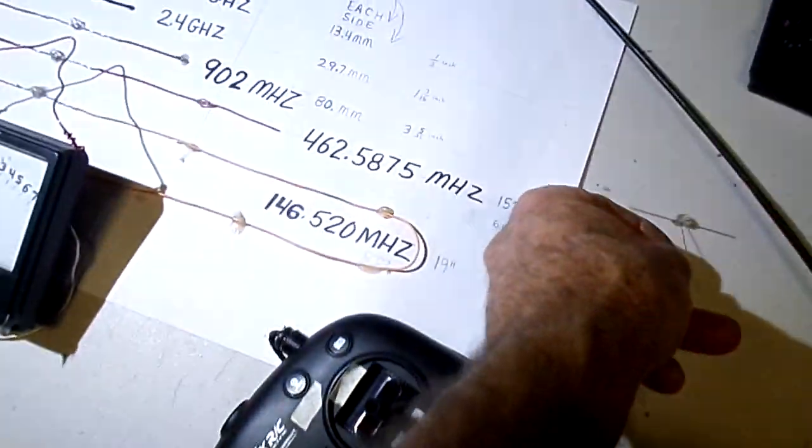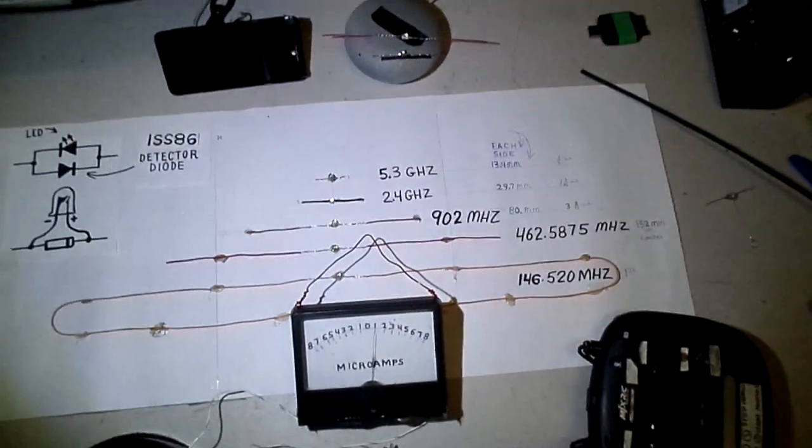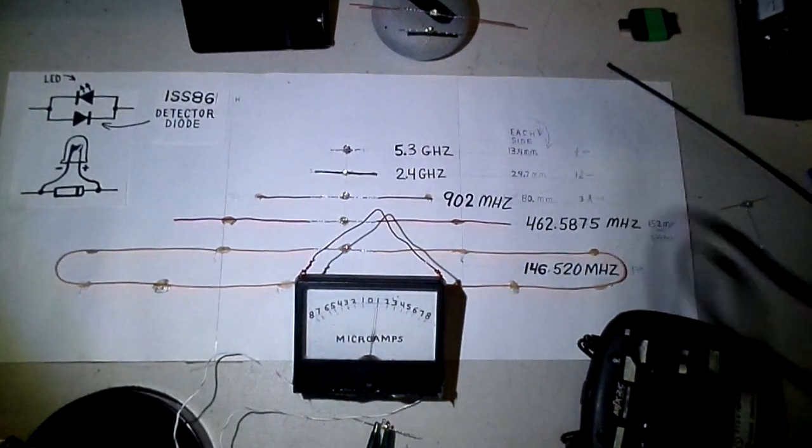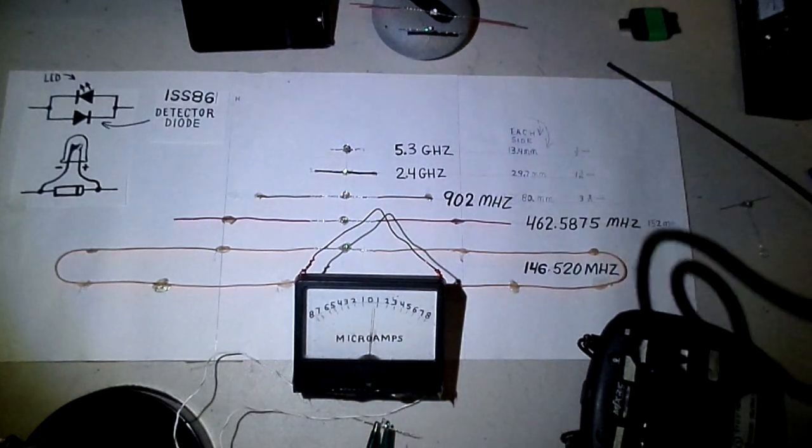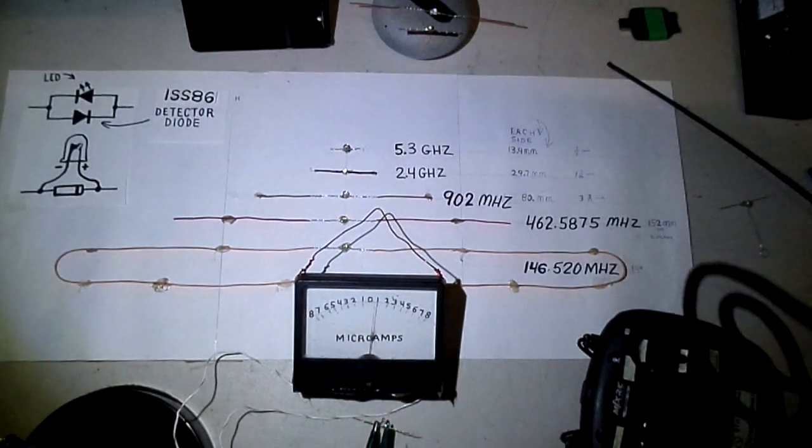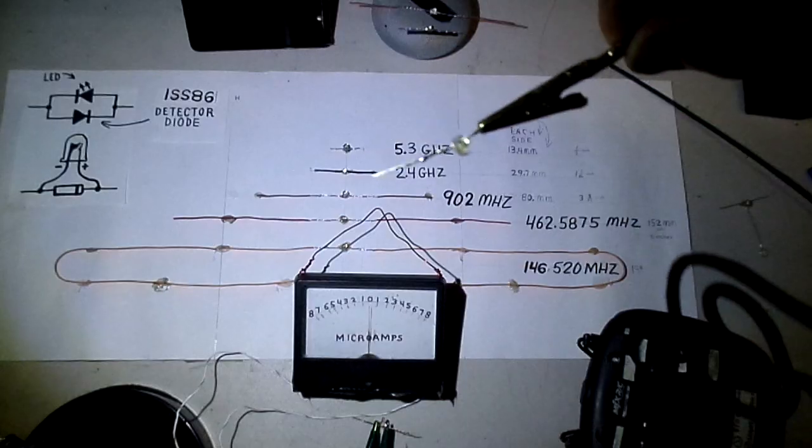So I didn't realize there was that much leakage from a microwave oven. So the other thing I noticed, I was able to take one end of the LEDs here. I've got one here that's hooked to my long wire antenna. Let me dim the light here so you can see this.